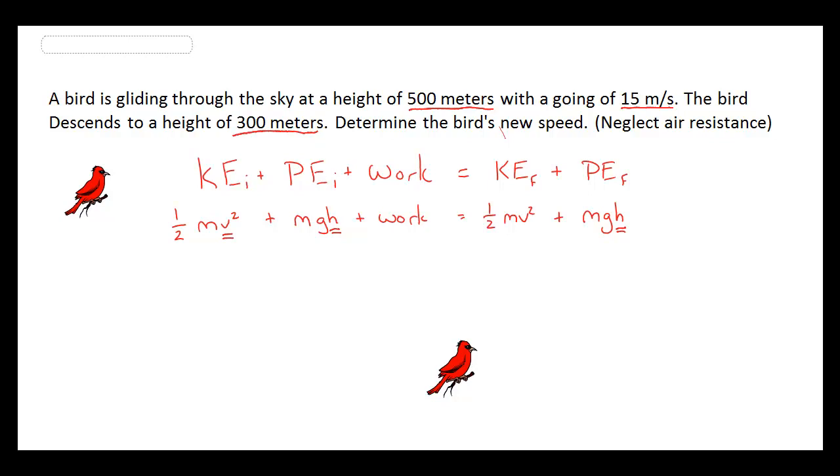The question is asking us, what is the brand new speed of this bird? That's where the whole problem is driving. Everything is going towards that variable and solving it. The problem tells us we are going to neglect air resistance, so air resistance is not going to be a factor for us today.